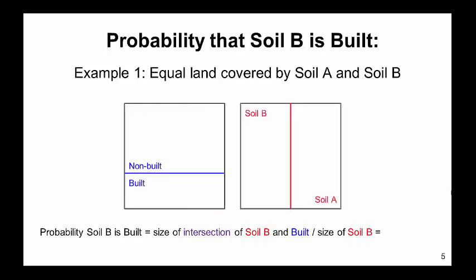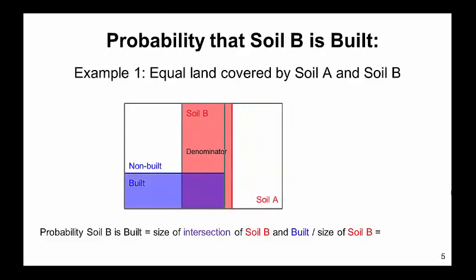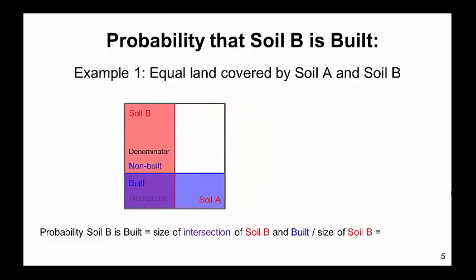In calculating the probability of soil B, the denominator is the size of soil B and the numerator is the intersection of soil B and built. The resulting probability is again 0.3, indicating that 30% of soil B is built.